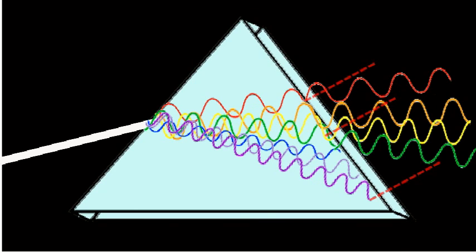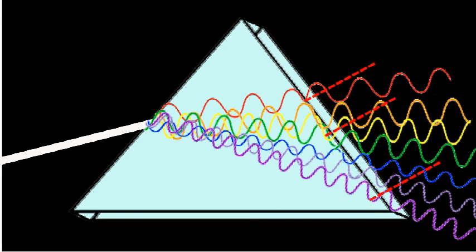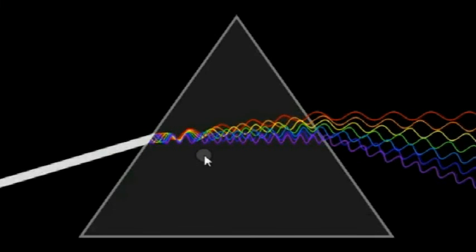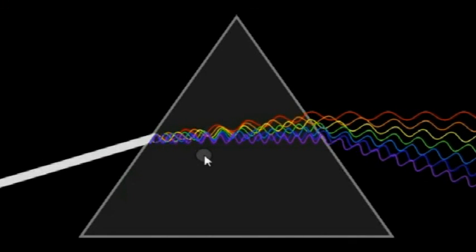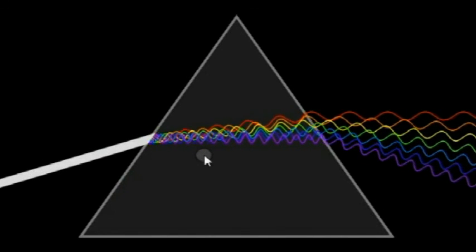Hence, coming out from the denser medium, it will tend to turn lesser and the violet turns more. And the violet turns away by the most distance from the normal. Hence, the different light color rays keep scattering more and more.